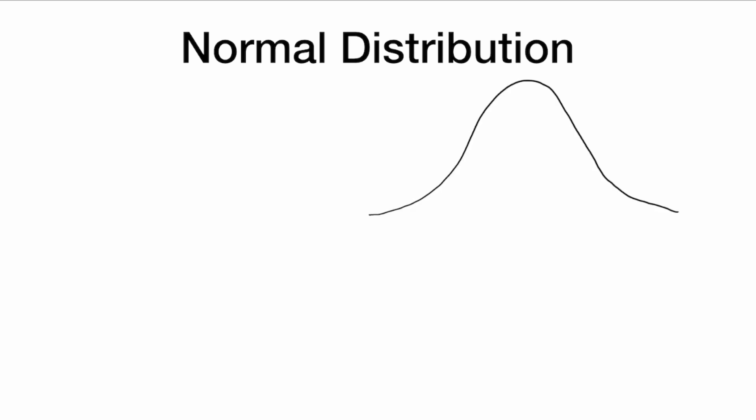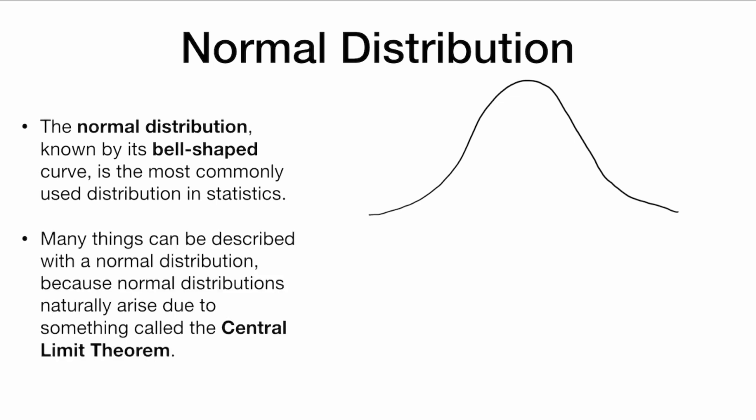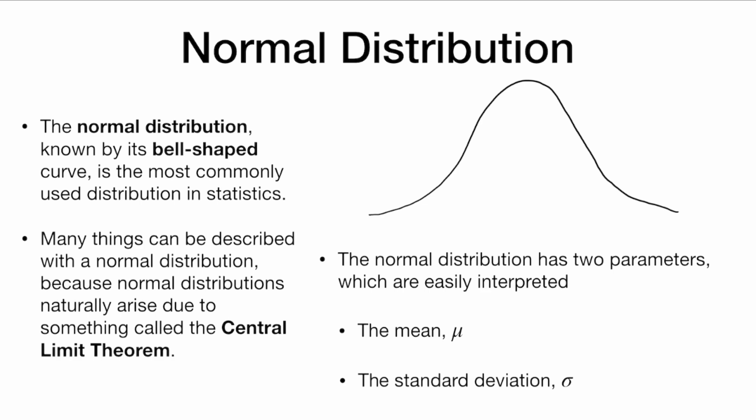Just a quick background: a normal distribution, known by its bell-shaped curve, is the most commonly used distribution in statistics. Many things can be described with a normal distribution because normal distributions naturally arise due to something called the central limit theorem. The normal distribution has two parameters, which are easily interpreted. A parameter describes some aspect of the distribution. The two parameters for the normal distribution are the mean, denoted by the Greek letter mu, and the standard deviation, denoted by the Greek letter sigma.